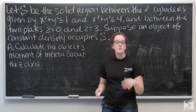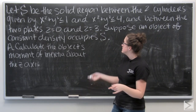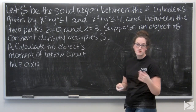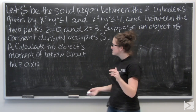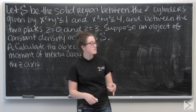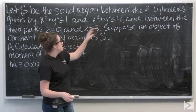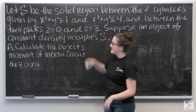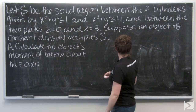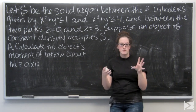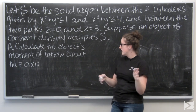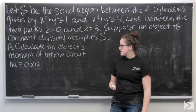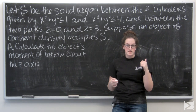For this problem, we're talking about moments of inertia. S is a solid region between two cylinders given by x² + y² ≤ 1 and x² + y² ≤ 4, and between the two planes z = 0 and z = 3. We're supposing that an object of constant density and mass m occupies this region, and we want to calculate this object's moment of inertia about the z-axis.